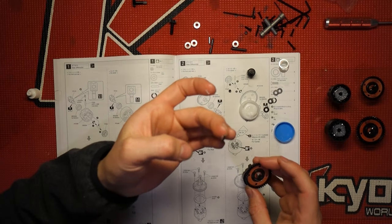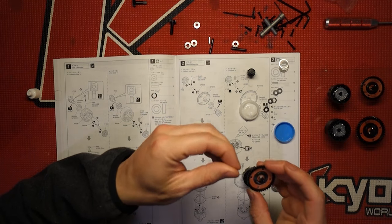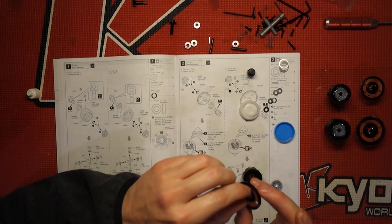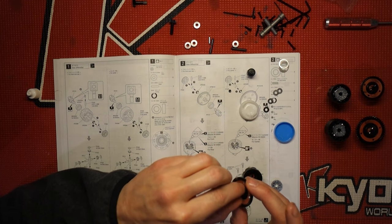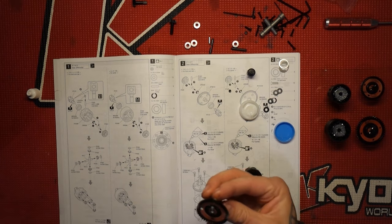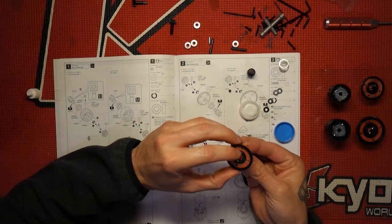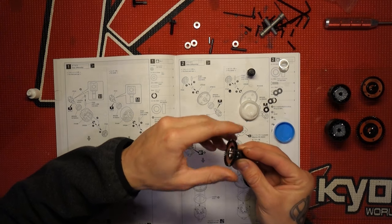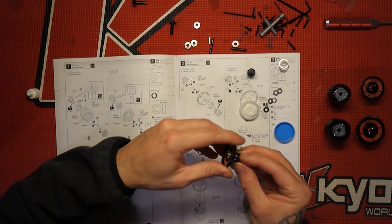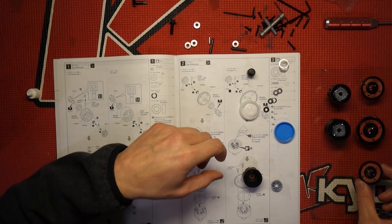And you kind of see we got grease squishing out everywhere, which is good. Then you pick up one of your pins. Throw a little bit of grease on it. And just check to make sure it's spinning freely. And set it off to the side.